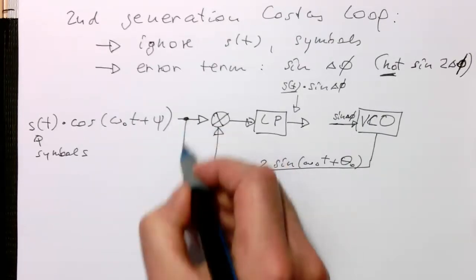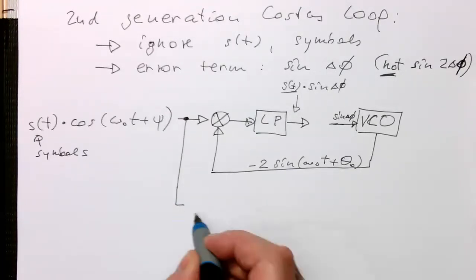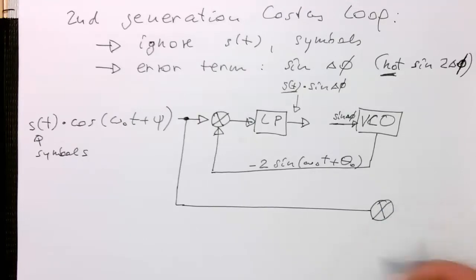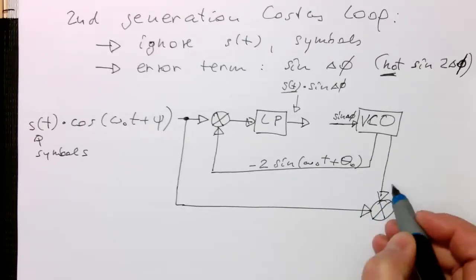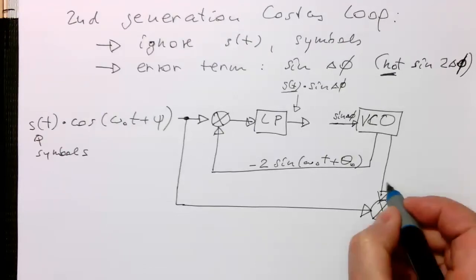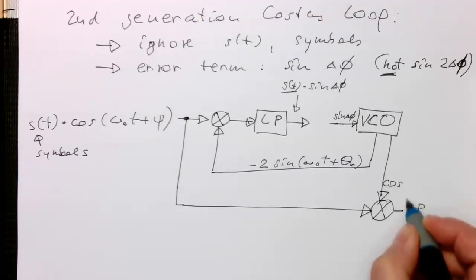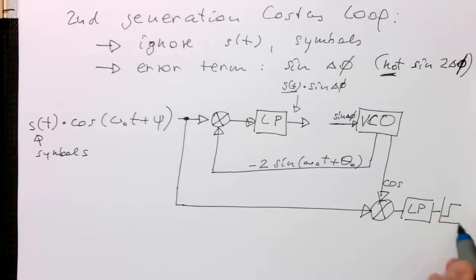So what we do is we just do our standard demodulation. This means we take the input signal and we use our multiplier here. We multiply this with the cosine signal from the VCO as we've done before. We are demodulating signals with our bandpass demodulator. So we take the cosine signal and we do a low-pass filtering of this signal. And then the output of that is S of T.